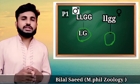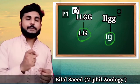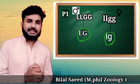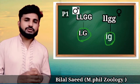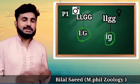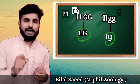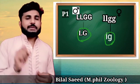From the parent, we have capital L and capital G as one gamete combination. We also have another gamete which is small l and small g.